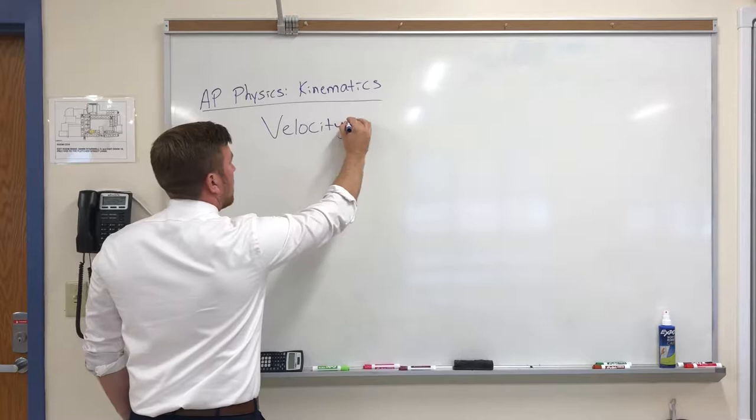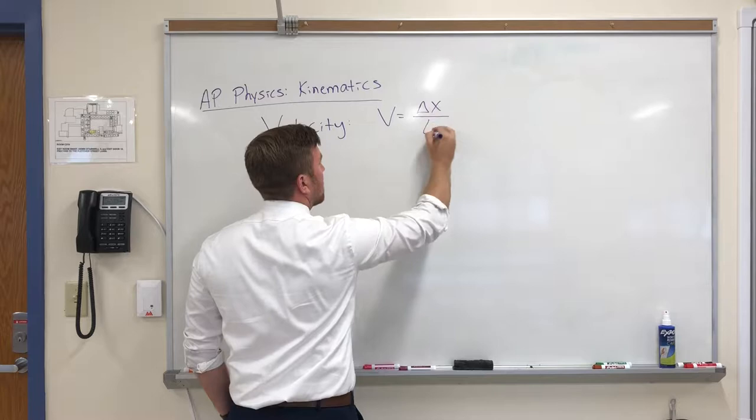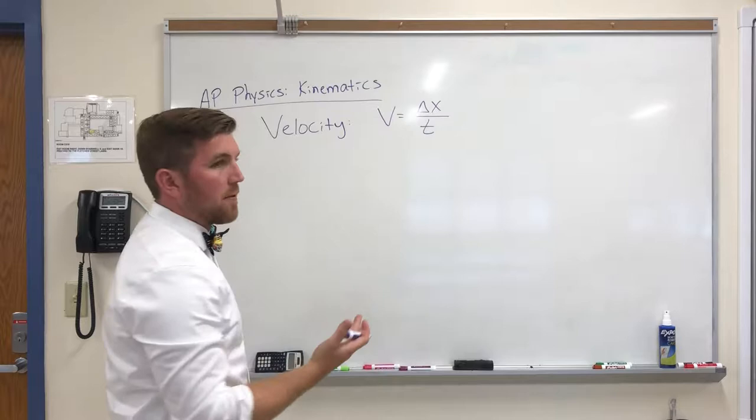So when we're talking about velocity, velocity has the equation of v is the change in position over time. So anytime I change my position, I have a velocity.